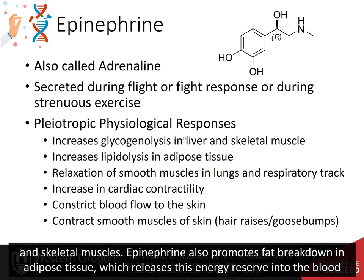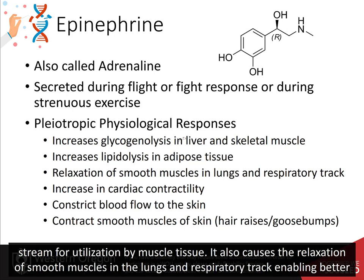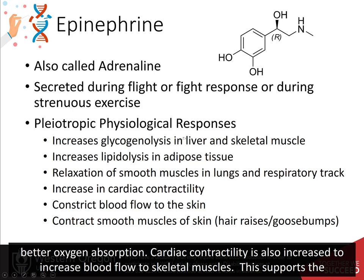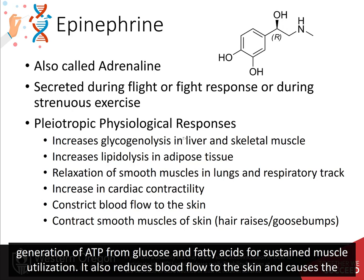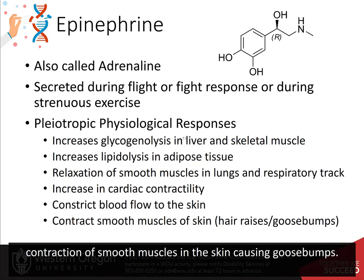Epinephrine also promotes fat breakdown in adipose tissue, which releases energy reserves into the bloodstream for utilization by muscle tissue. It also causes the relaxation of smooth muscles in the lungs and respiratory tract, enabling better oxygen absorption. Cardiac contractility is also increased to increase blood flow to skeletal muscles, supporting the generation of ATP from glucose and fatty acids for sustained muscle utilization. It also reduces blood flow to the skin and causes the contraction of smooth muscles in the skin, causing goosebumps.